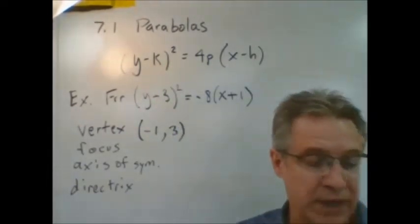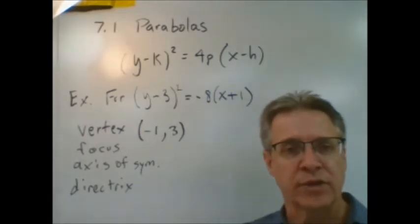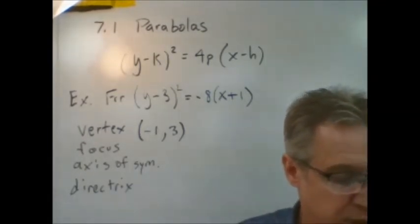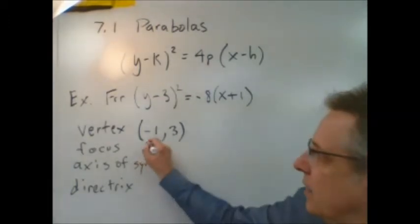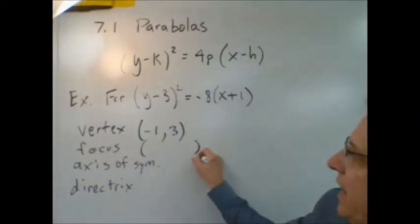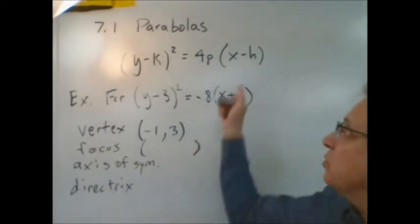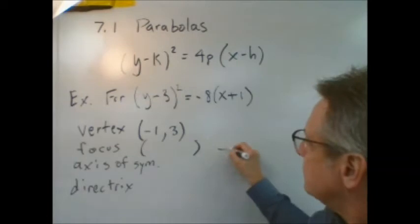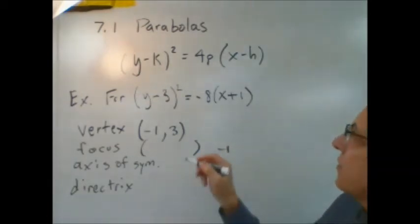And so using the equation sheet, we get the vertex very quickly. The focus, it says h plus p, k. Now, h plus p. h, we know, is negative 1. And now p, we have to find p.